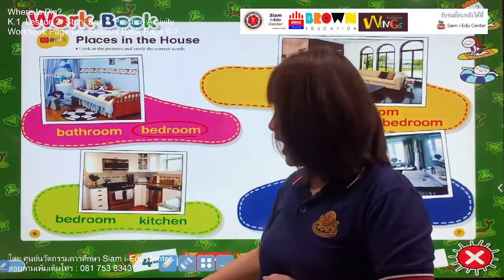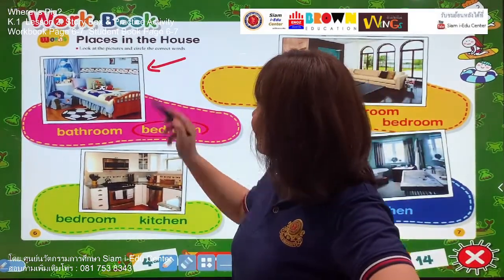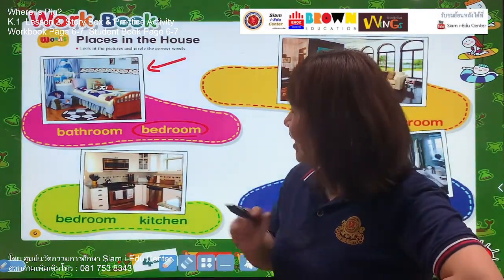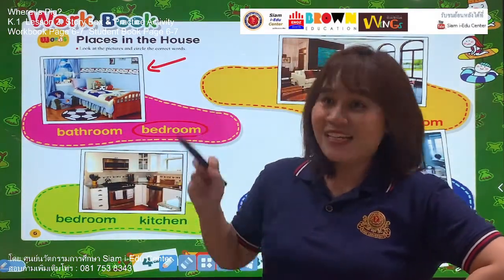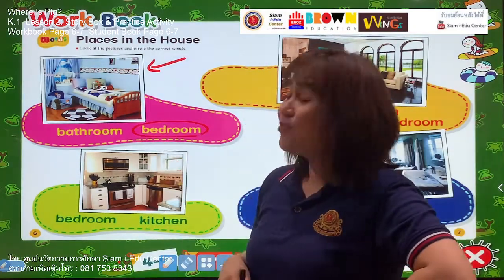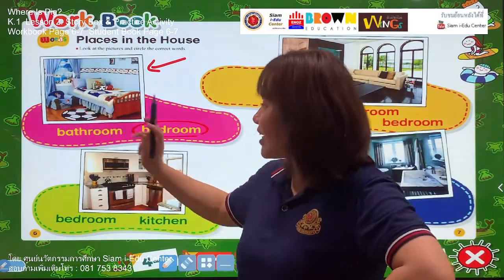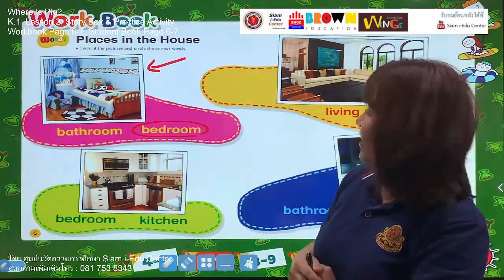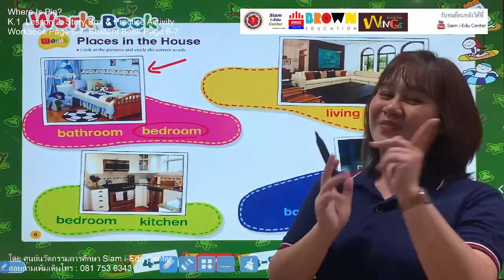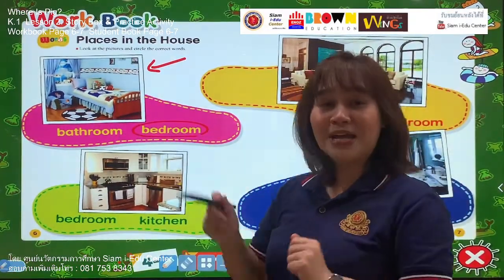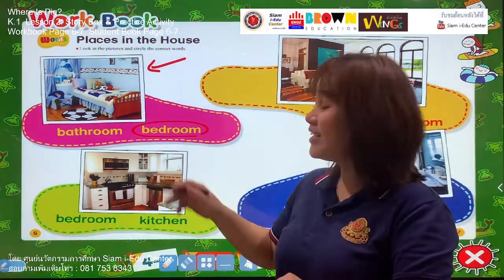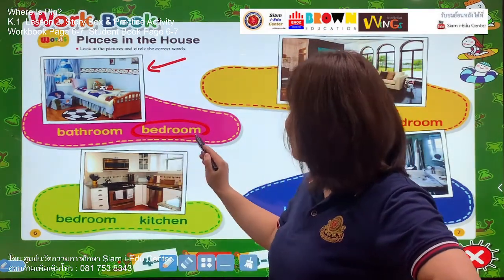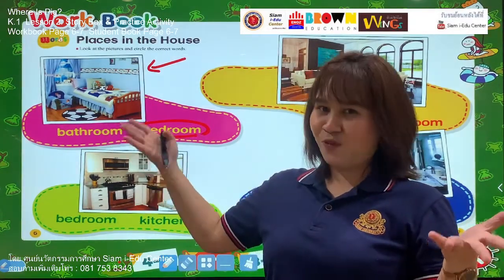Look at the first picture. What can you see? Can you see a bed? Yes, and on the bed there are some pillows. How do we call this room? Bedroom! Yes, it's a bedroom. This one is called bedroom — we are going to circle the right word. This one is the example, and we have already circled bedroom here.